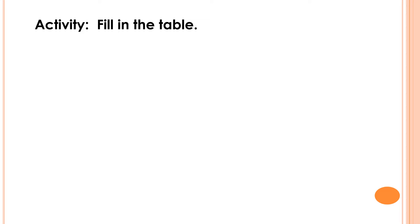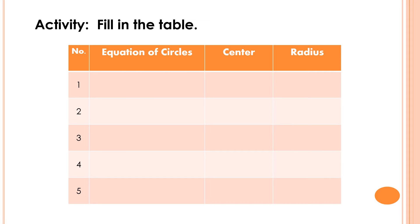Let's have an activity where we're going to fill in the table. In item number 1, the given equation is the quantity of x minus 2 squared plus the quantity of y minus 5 squared is equal to 25. We're going to determine the coordinates of the center and the radius. The value of h is 2, the value of k is 5, and the value of r squared is 25. So the center is (2, 5), and for the radius, the square root of 25 is 5, therefore the radius of the circle is 5 units.